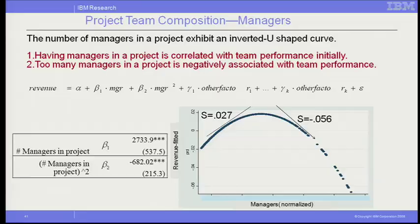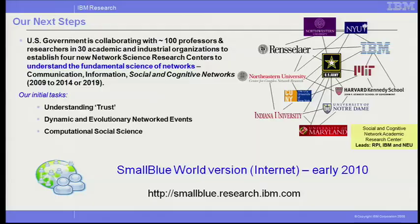A weak, casual link to your manager doesn't help. We also found that in a project team at the very beginning, having more managers helps you earn more, but after a while your performance drops. So having many managers in a project team may not help that much over time. This is actually a delicate finding because it means telling management you cannot have too many managers.